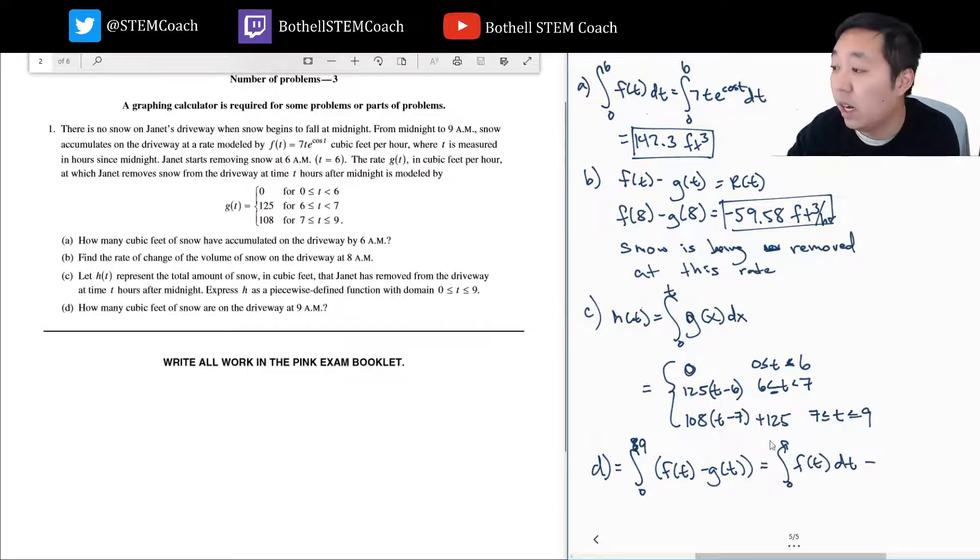Minus how much was taken away, right? This is how much has been added by the snow, and how much was taken away I solved in part C, which would be 108 times (9 - 7 is 2) plus 125. So this portion is what I found in part C - I just plug in t equals 9. This is how much snow is removed, and this is how much snow is accumulated, kind of like we did in part A.